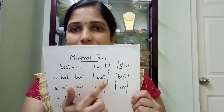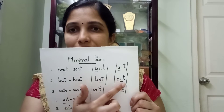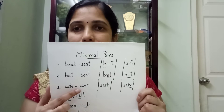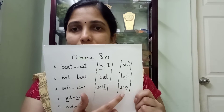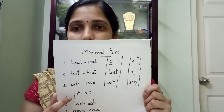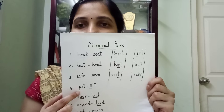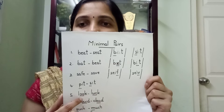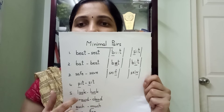Bat and bet differ in the middle vowel sound. Safe — the final sound differs. Pit and sit differ in the initial sound. Look and luck — the spelling shows 'oo' versus 'u', and the vowel sound in the middle changes.